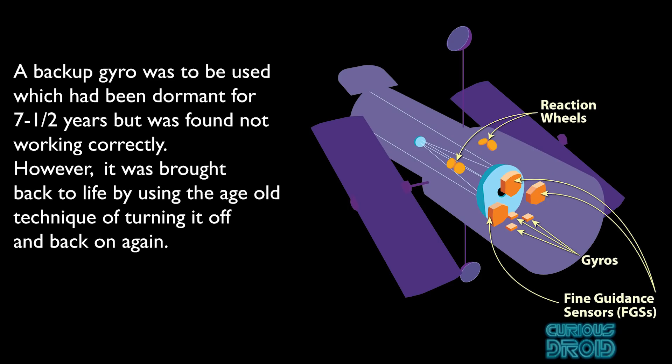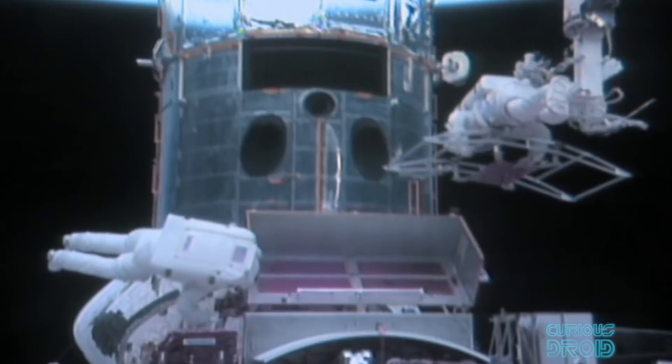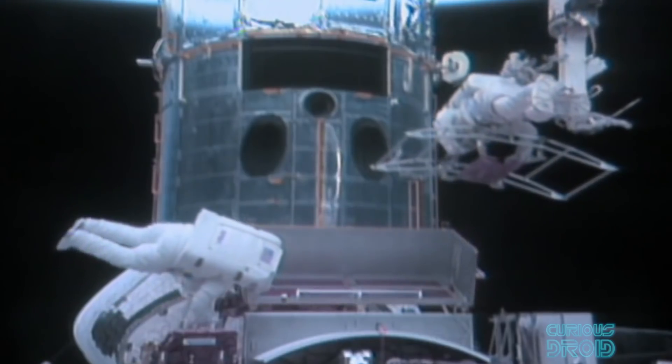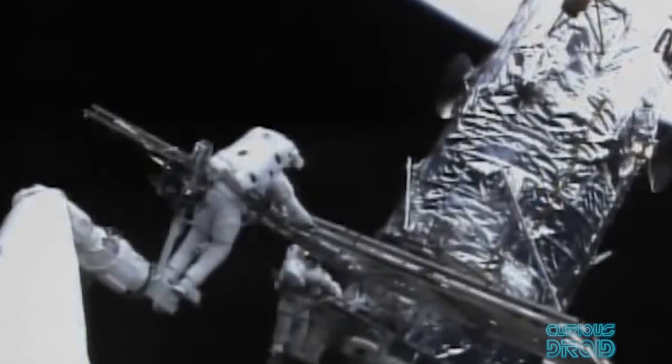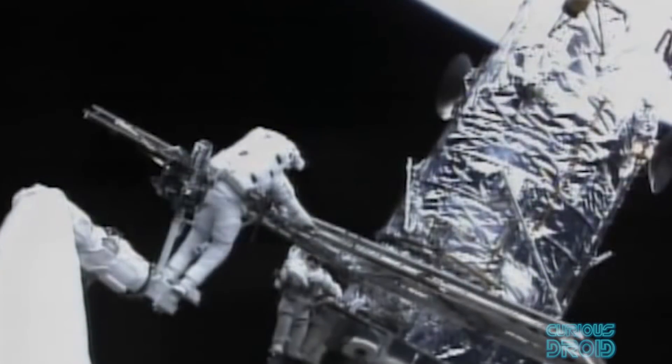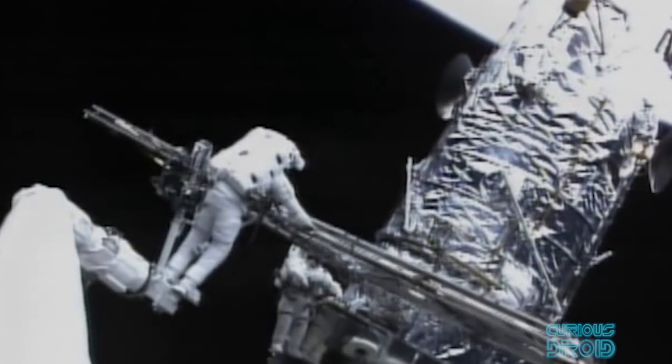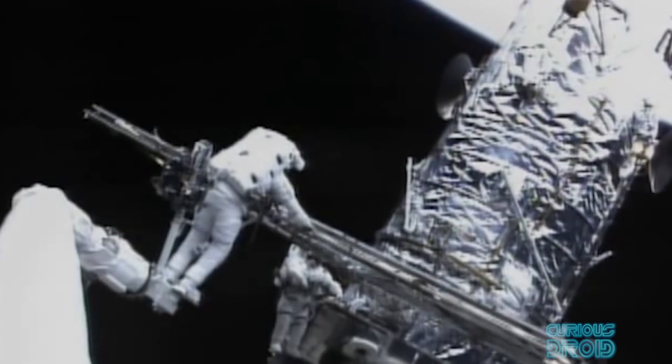Although it ideally needs three to operate, one for each axis—the X, Y, and Z—new operational techniques mean that it can work with just one. As part of the ongoing servicing of Hubble, the newer design gyros, along with a list of other equipment, had been installed on a previous service mission, but these are mechanical devices and as such they will wear out eventually.